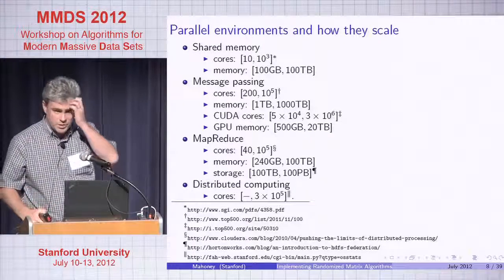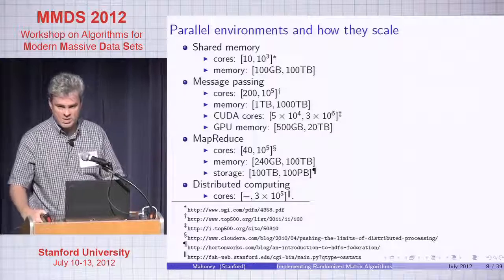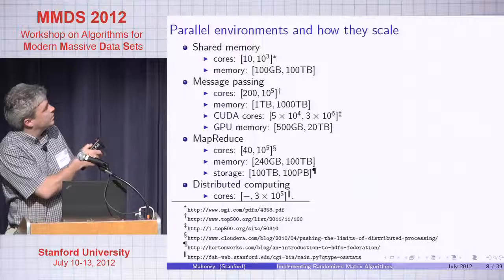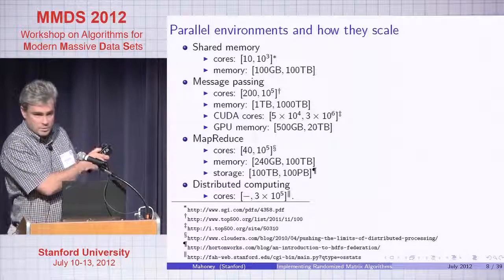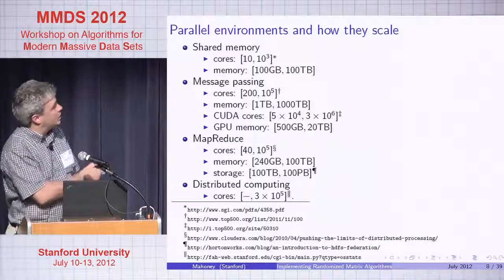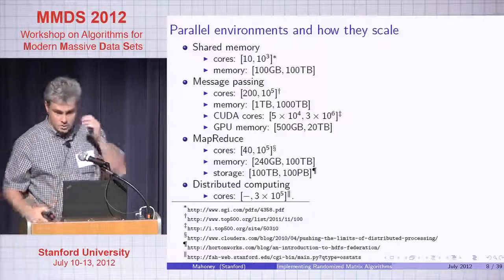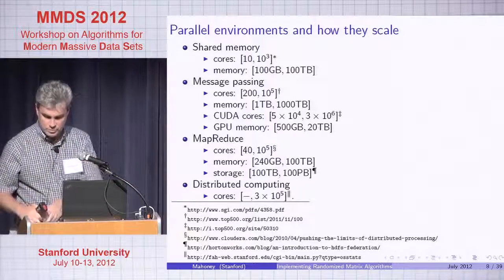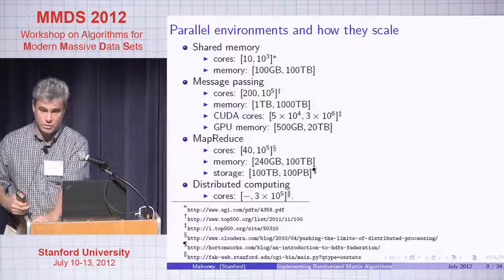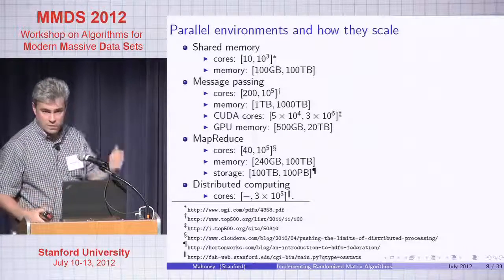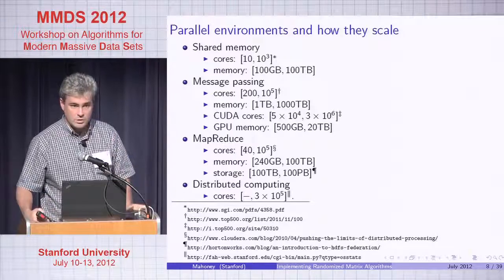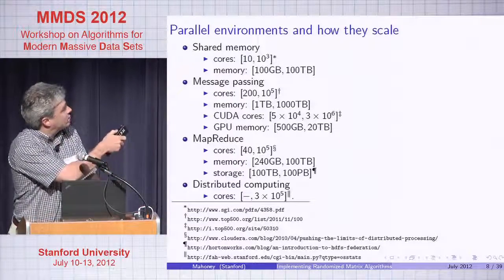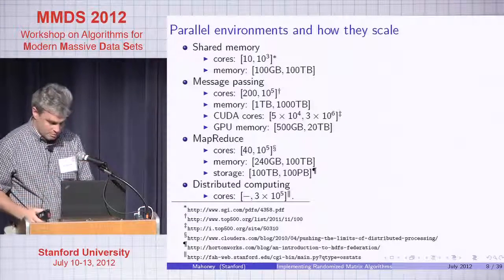Parallel and distributed means different things to different people. You might have shared memory; slightly larger requires MPI or message-passing interfaces; even larger, you may want MapReduce. Without making claims about whether MapReduce is the right or wrong way, it's the de facto standard for a lot of very large-scale analytics. It has a restrictive interface, so one question is how you can do richer computations. We'll be talking about both MPI and MapReduce implementations.